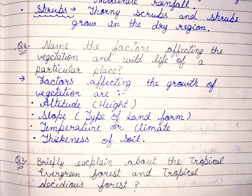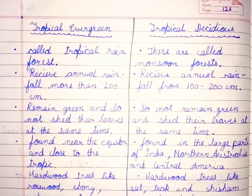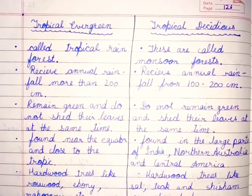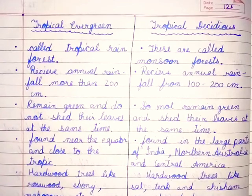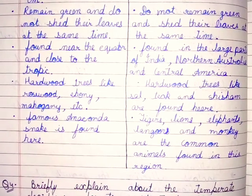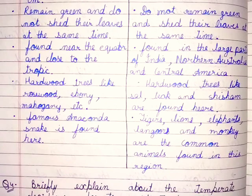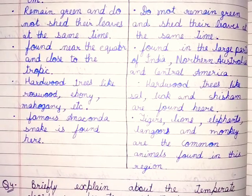Question number 3: briefly explain about the tropical evergreen forest and tropical deciduous forest. Tropical evergreen forests, also called tropical rainforests, receive annual rainfall of more than 200 cm. They remain green and do not shed their leaves at the same time. Found near the equator and close to the tropics. Hardwood trees like rosewood, ebony, and mahogany are found here. The famous anaconda snake is found in the tropical evergreen forest.